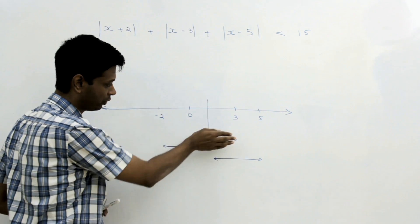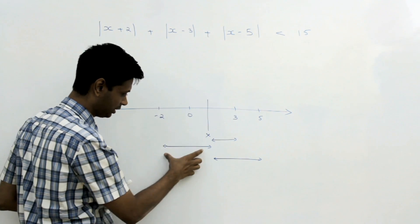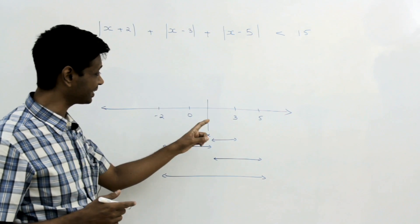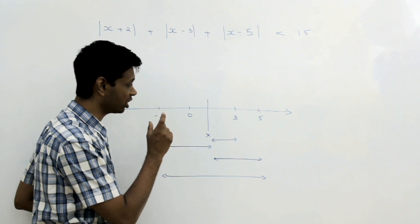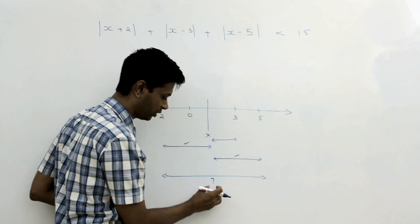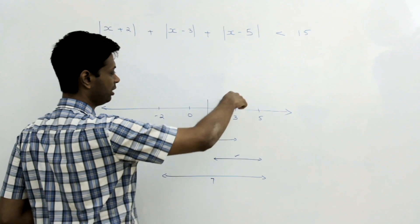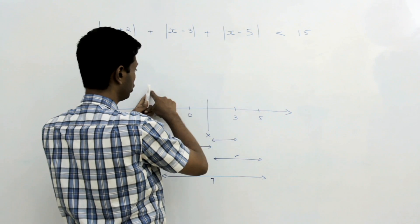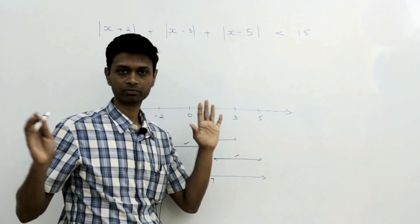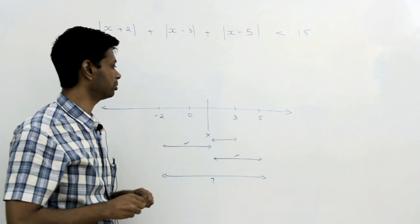Straight away notice one point: the distance from x to -2 and the distance from x to 5 will always add up to the distance between -2 and 5, which is 7 units. So for any point x between -2 and 5, those two terms always add up to 7 — whether x is here, here, or very close to 5 but less than 5, it does not matter. So any point between -2 and 5, this expression boils down to 7 plus the distance between x and 3.